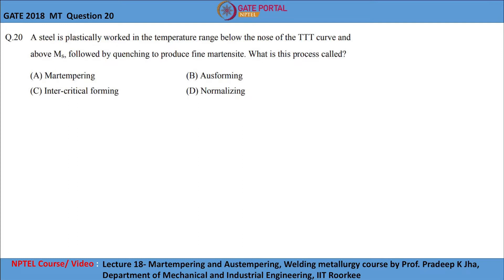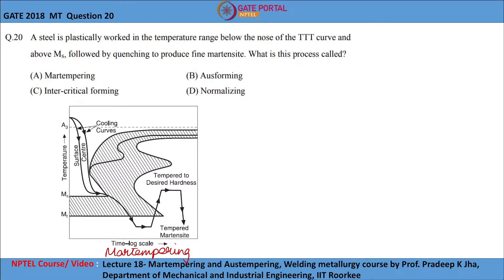Before going for the answer, let me briefly discuss each process. This is the TTT diagram explaining the martempering process. The first step in martempering involves heating the steel above austenitizing temperature (A3), followed by quenching to the temperature just above the martensite start temperature. Once uniform temperature is ensured throughout the sample, it is then subjected to air cooling, and the desirable microstructure for this process is 100% martensite.